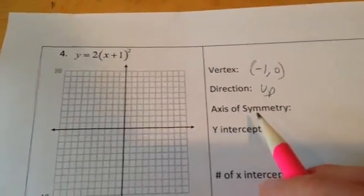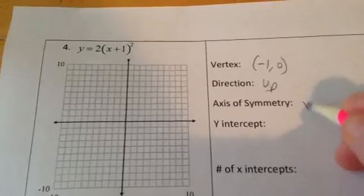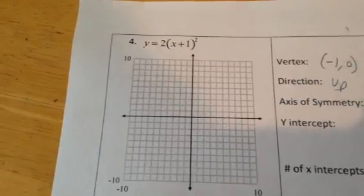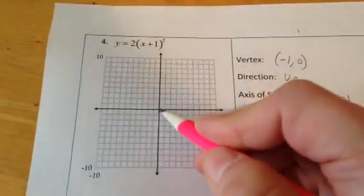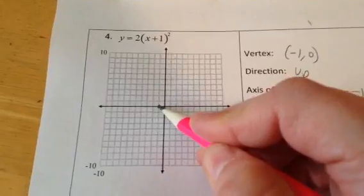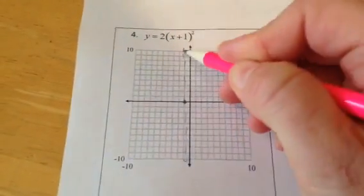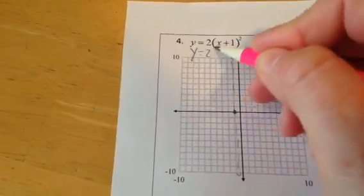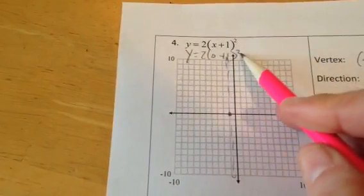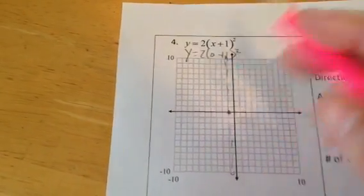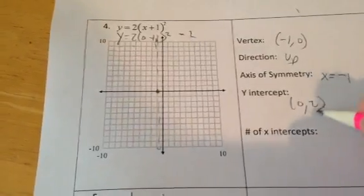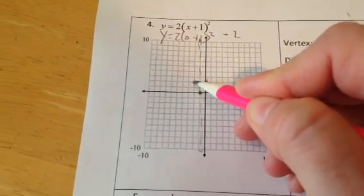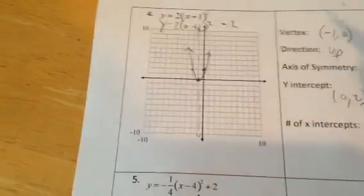Axis of symmetry is x equals negative 1. So I've got vertex at negative 1, 0. Axis of symmetry goes straight through that vertex. My y-intercept happens when x is 0: y will be 2 times (0 plus 1) squared. 1 squared is 1 times 2 is 2. So when x is 0, the y is 2. I get a point on the other side of the axis of symmetry for free, and there's my parabola.